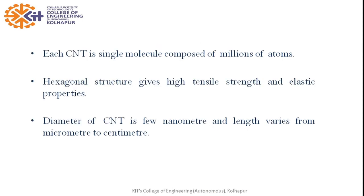Since graphene is a single molecule and the rolled-up sheet of graphene is the CNT, one carbon nanotube is naturally one molecule made up of millions of carbon atoms. It is very strong because breaking the bonds of a single molecule is very difficult. The hexagonal structure gives it very high tensile strength and elastic properties. The diameter of a carbon nanotube is a few nanometers, but its length may be in micrometers or even centimeters.